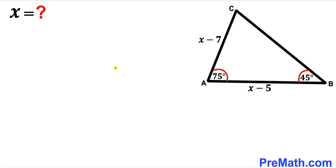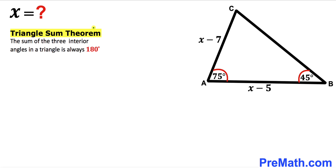Let's get started. Our very first step is to recall the triangle sum theorem: the sum of three interior angles in a triangle is always 180 degrees. So in triangle ABC, since this angle is 75 degrees and this angle is 45 degrees, angle ACB has got to be 60 degrees.